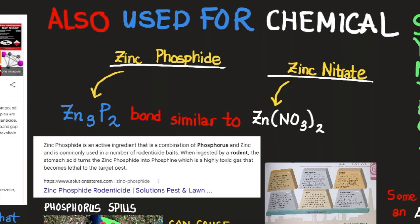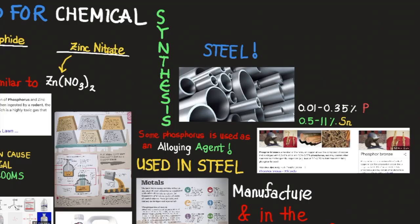So phosphorus is used as an alloying agent, which means it's used in the production of things such as steel. Steel is simply a combination of iron and carbon. The carbon dopes the iron bonds in order to make it more flexible and more rigid.